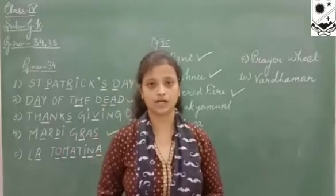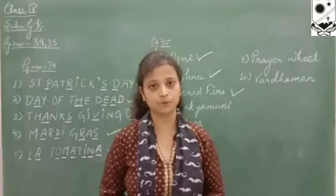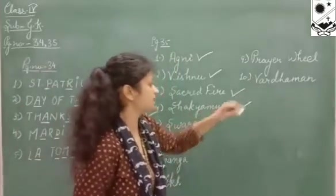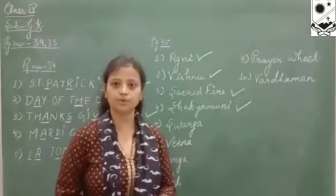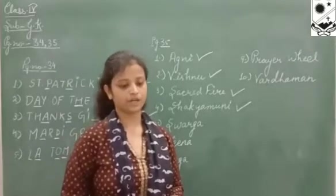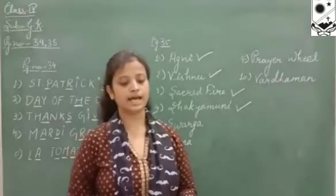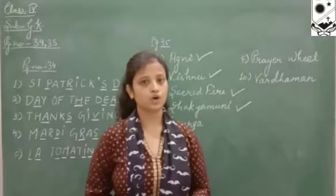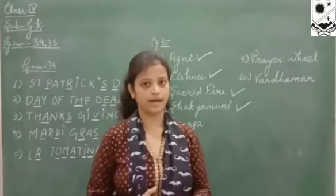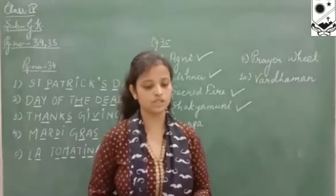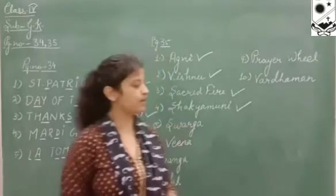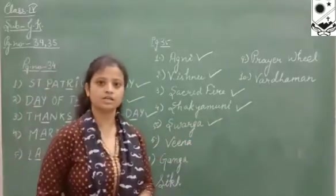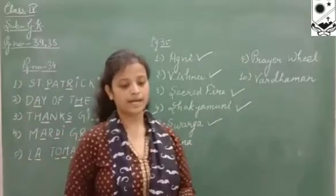The fourth description: another name for Lord Buddha is Shakyamuni. The fifth description: the heaven of Hindus is called Swarg.